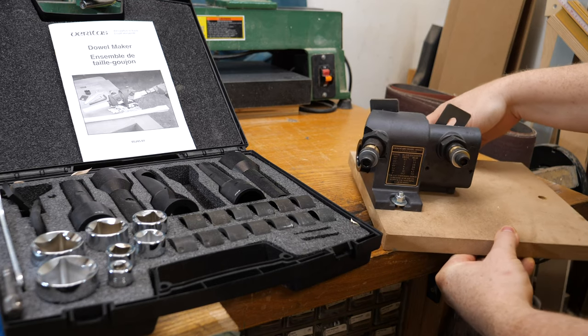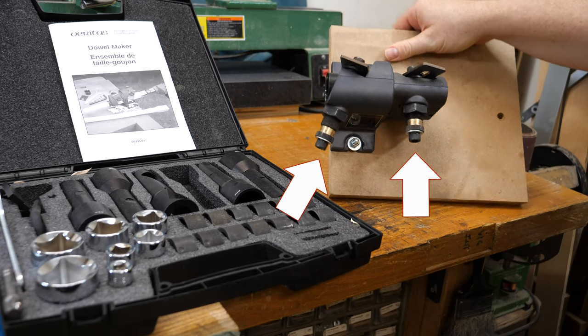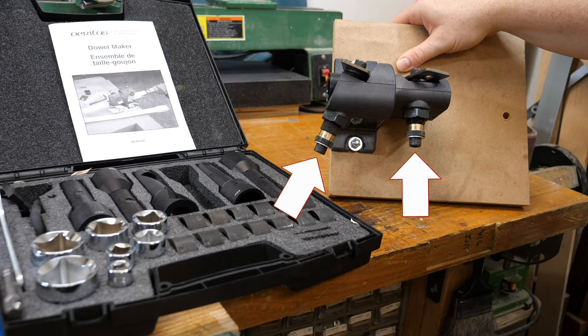The bolts on the back adjust the projection of the blades, which changes the initial rough cut diameter and the final cut diameter of the dowel.